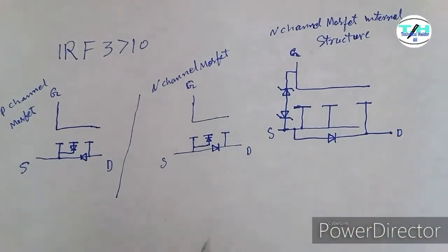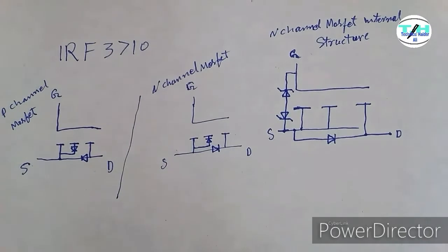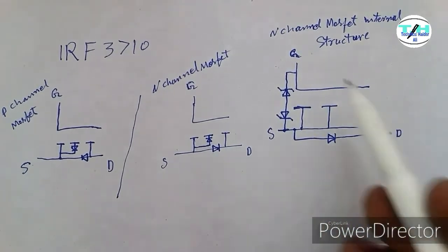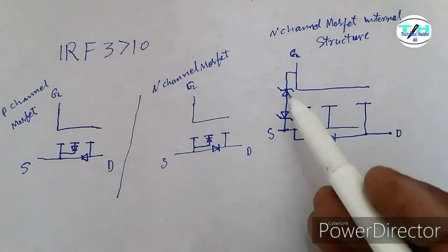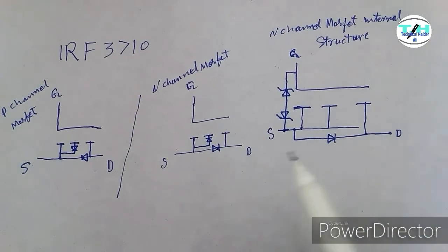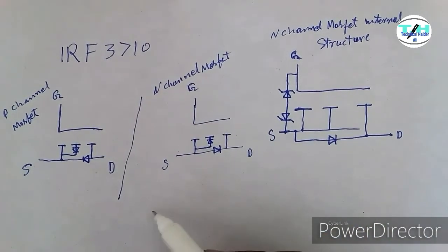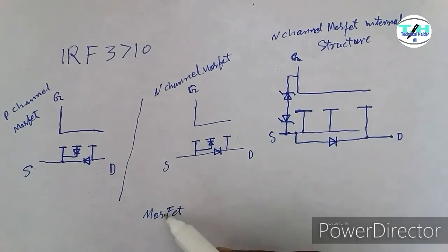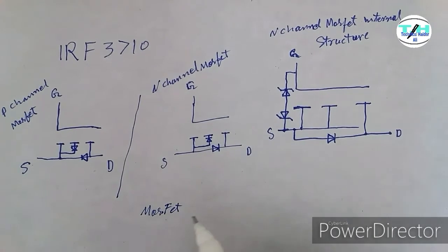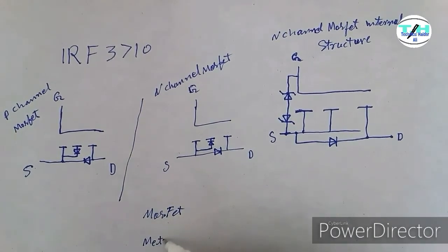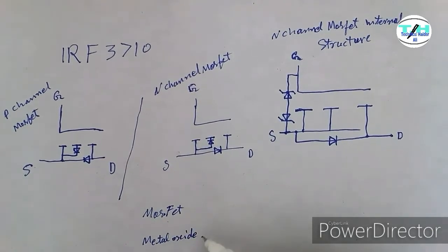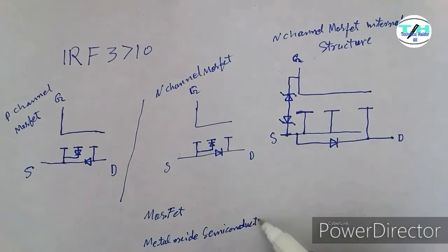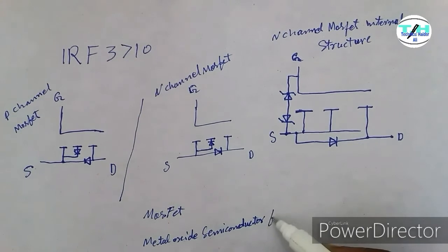Today we will not discuss the P-channel. Today we will talk about the N-channel MOSFET. This is the internal structure of the N-channel MOSFET IRF series. It consists of three terminals: source, drain, and gate. The name implies Metal Oxide Semiconductor Field Effect Transistor.